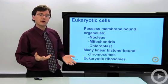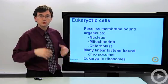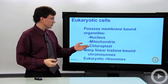Most eukaryotic cells also have mitochondria, and those that can do photosynthesis will have the membrane-bound organelle called the chloroplast.